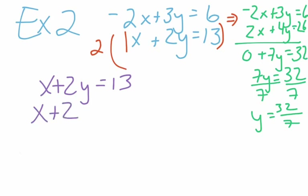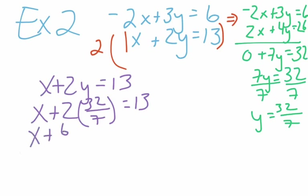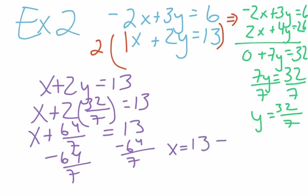Typically at this point I would show students how to use your calculator to handle all of these fractions. Your calculator will handle all of the fraction arithmetic for you. Two times thirty-two over seven is sixty-four over seven. To solve this, subtract sixty-four over seven from both sides, so X equals thirteen minus sixty-four over seven. That one does have a common denominator of seven — you can change it to ninety-one over seven — but I'd probably just use my calculator.